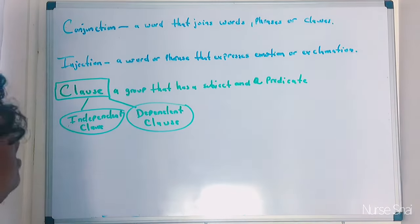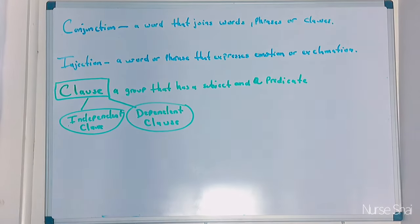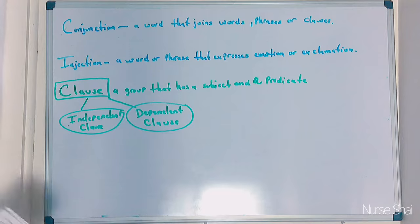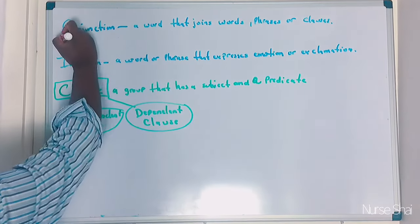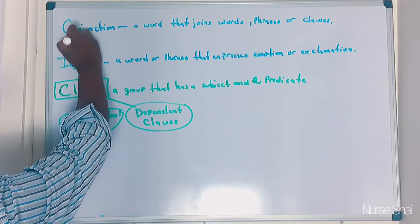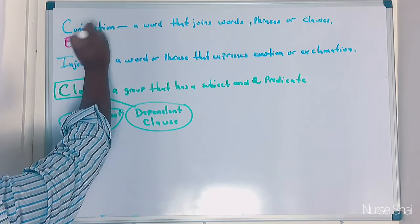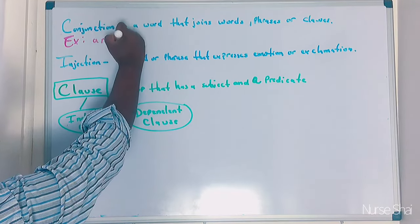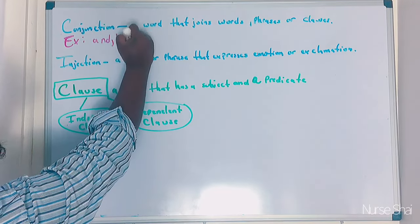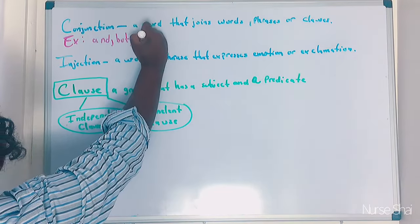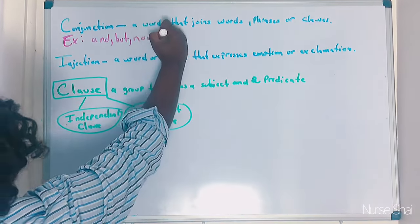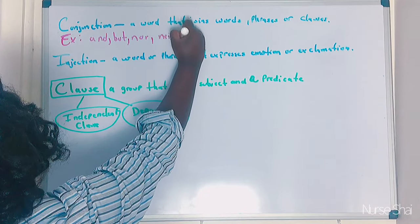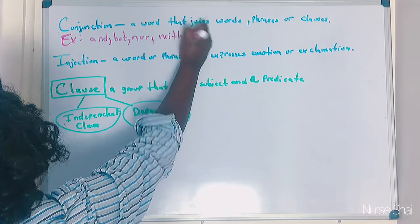Conjunction is a word that joins words, phrases, or clauses together. Examples of conjunctions would be 'and,' 'but,' 'nor,' 'neither' — words like that.